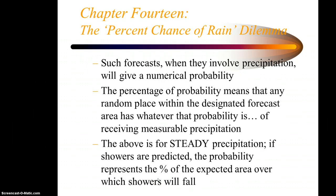Such forecasts, when they involve precipitation, will give what's called a numerical probability. This is the big chance of rain dilemma. When you're watching a TV weathercast or getting the weather information from some source, they're going to issue, if precipitation is expected, a percentage. That is the probability that that precipitation is going to be measurable or not. The percentage of probability means that any random place within the designated forecast area has whatever percent probability of receiving measurable rain, snow, or precipitation.